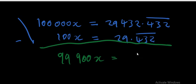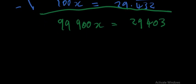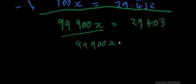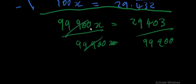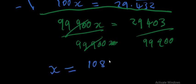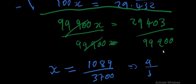When we subtract, 99,900X = 29403. Remember, you are not supposed to use a calculator — just use your head. We then divide throughout by 99,900. Looking for a common factor to reduce the fraction, we find that X = 10,890 over 99,900, which simplifies to X = 1089/9990, and further to X = 109/999... ultimately simplifying to 10890/99900.